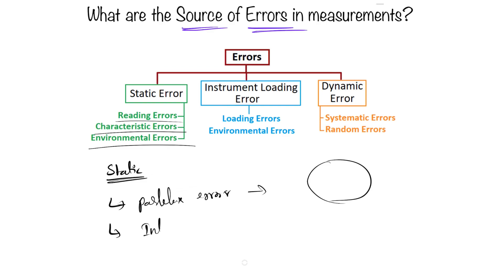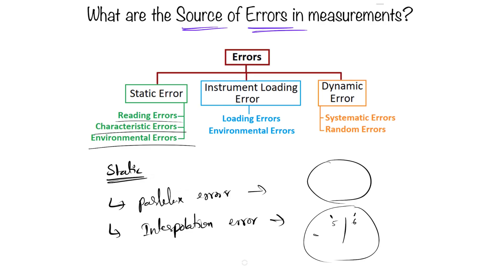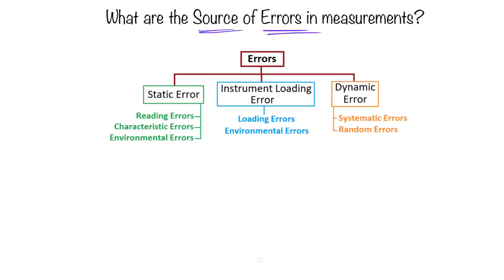The second reading error is interpolation error. If the needle on the dial falls between two graduations — say between 5 and 6 — we might read it as 5.6, but our interpolation assumption could be wrong, introducing an error. This kind of interpolation error can occur under static errors.